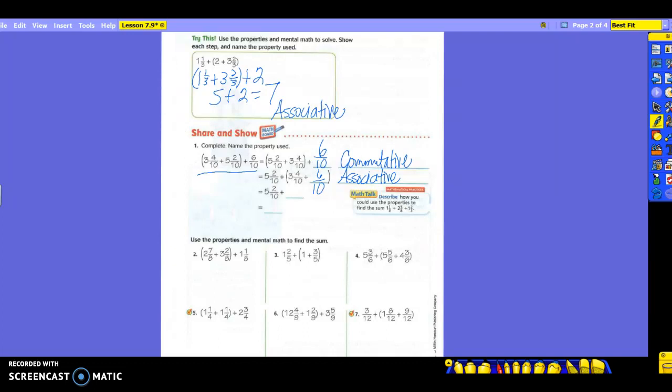What do I get when I add 3 and 4 tenths plus 6 tenths? 6 tenths and 4 tenths gives you what? 10 tenths, which is what? A whole plus the 3. So I have 4. No fraction. Just 4 whole. Then I'm going to add that with the 5 and 2 tenths, and I get what? 9 and 2 tenths. 9 and 2 tenths. Everybody understanding these?